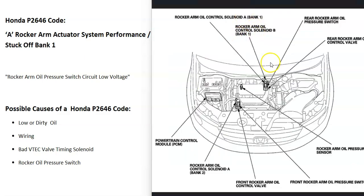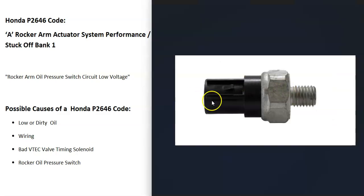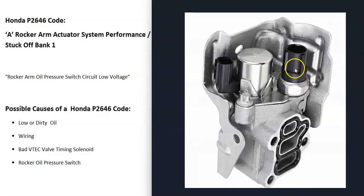For example, on this engine the back side is bank one. The VTEC solenoid is located back here by the firewall, and the oil pressure switch for this VTEC is located on it. It's basically just a small switch that can screw in and out, and it can be tested and replaced.